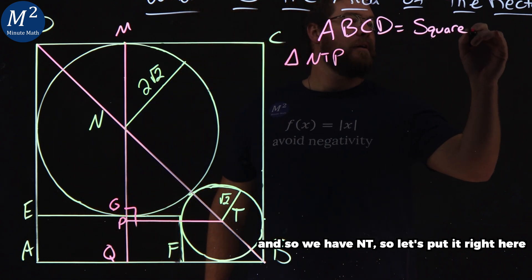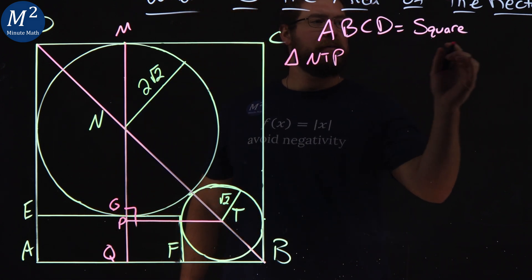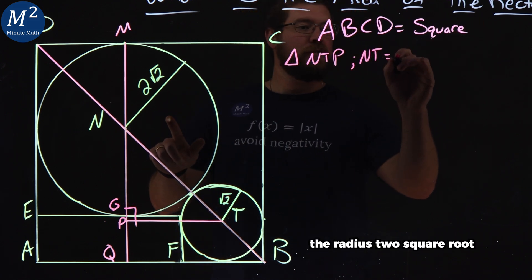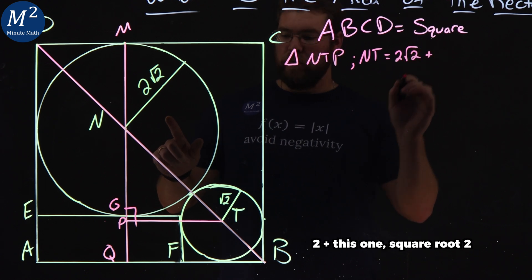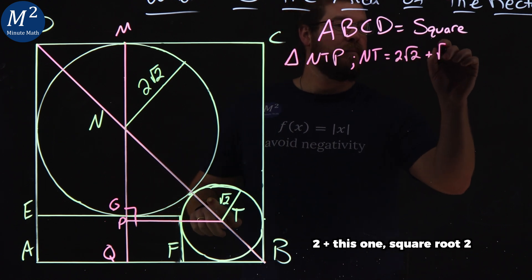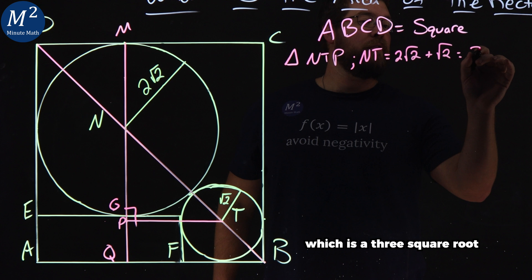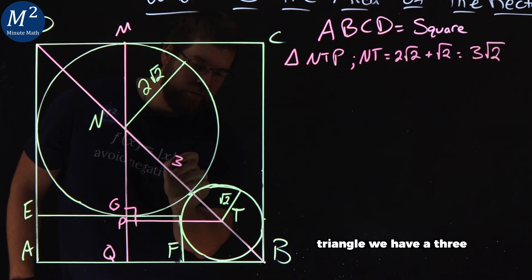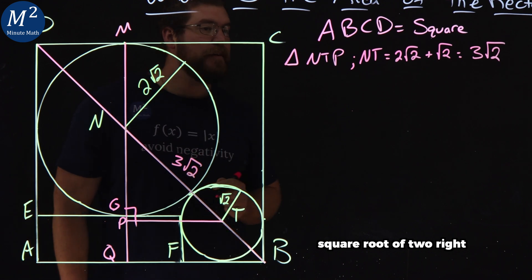So let's put it right here. NT has the length of the radius 2√2 plus this one, √2, which is 3√2. So the length here of this triangle, we have a 3√2 right there.